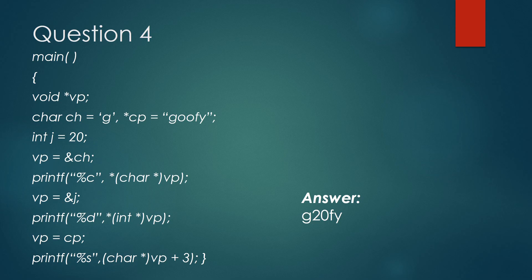So the output of the first printf statement will be g. Similarly, the output from the second printf is 20. The third printf statement is typecasted to print the string, so the output will be fy. Hence the answer will be g20fy.